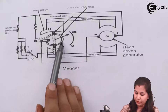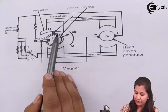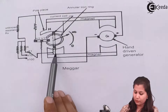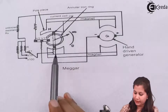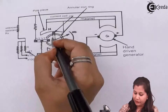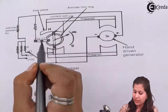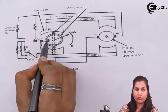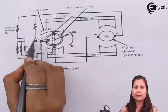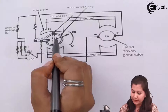The current coil is circular in shape. We have an annular iron ring in between the two magnets. The current coil is in the vertical position, and in the horizontal position we have the two voltage coils V1 and V2, which are also known as the potential coils. The current coils are also known as the pressure coils.